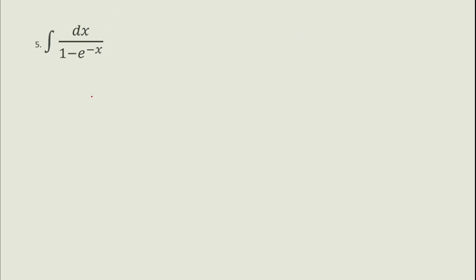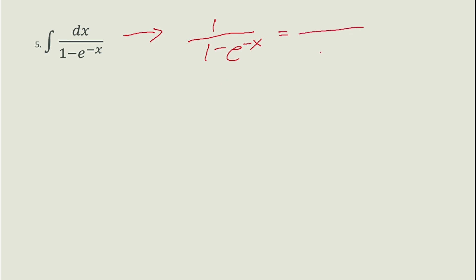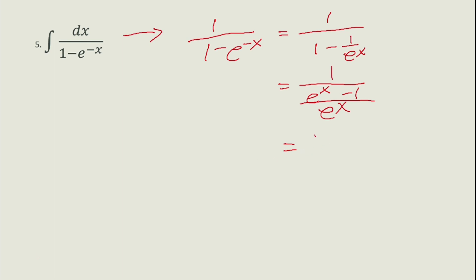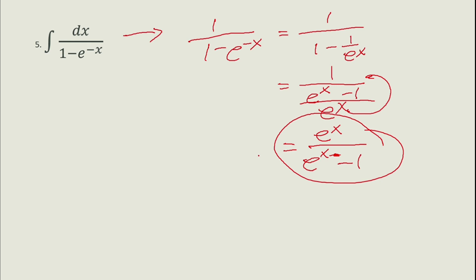For number five, we need to simplify first. We have 1 minus 1 over (1 minus e^(negative x)). Finding the LCD, this simplifies to (e^x minus 1) over e^x. Taking the reciprocal gives e^x over (e^x minus 1). So we now need to integrate e^x dx over (e^x minus 1).